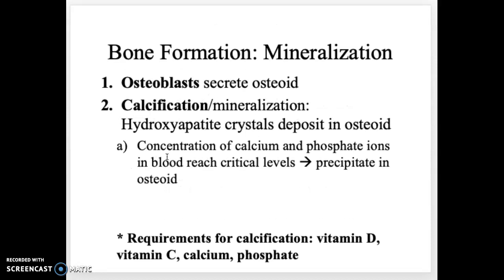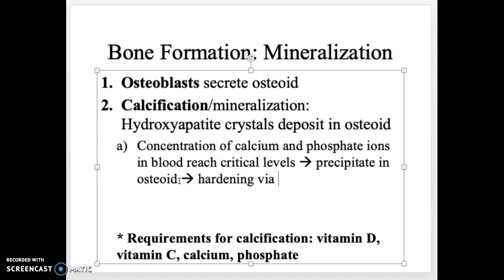The bone hardens as calcium ions and phosphate ions in the blood reach a high enough concentration to precipitate into the osteoid, leading to calcification. This is similar to dissolving sugar in water — a small amount dissolves easily, but adding too much causes it to precipitate. Similarly, when calcium and phosphate concentrations in the blood are high enough, they precipitate into the bone and harden it.